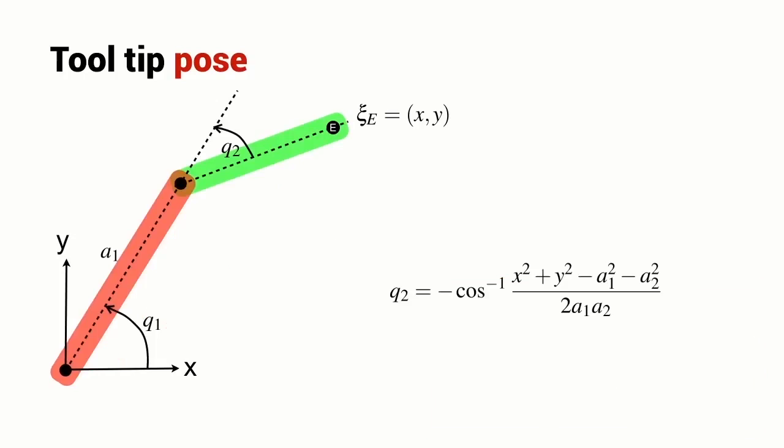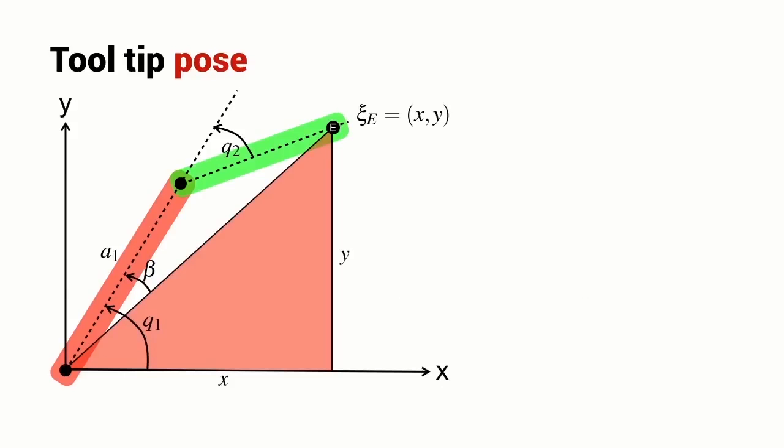In this case, Q2 is negative and we're going to write the solution for Q2 with a negative sign in front of the inverse cosine. Now we need to solve for Q1. So we're going to introduce this particular red triangle, the angle beta that we saw previously and the angle gamma which is defined in terms of Y and X.